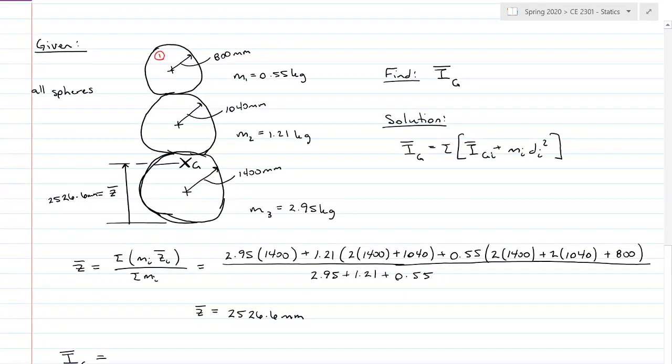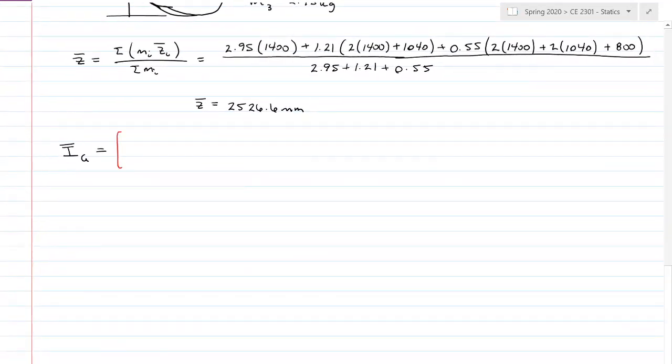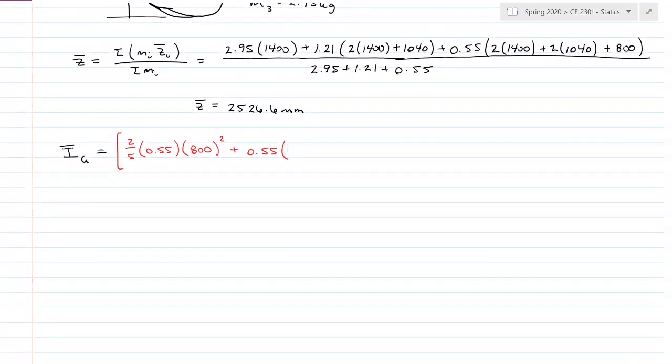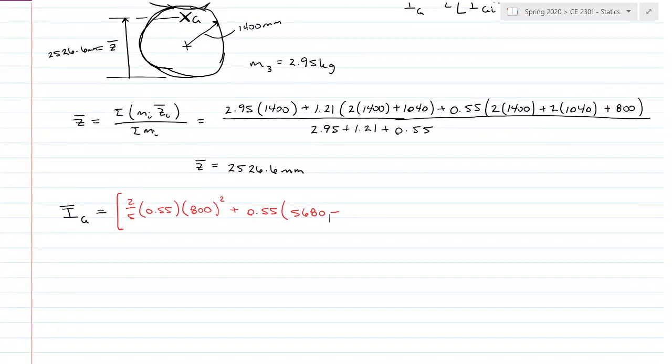So my top sphere here is one. The mass moment of inertia for a sphere is 2/5 times the mass, 0.55 kilograms, times the radius, 800 millimeters, squared. Then I need to move it plus the mass times the distance I want to travel. And I find that from the bottom of my little snowman shape to the center of mass one is 5,680 millimeters minus from the bottom to the composite mass center, 2,526.6, squared. End bracket, so there is my first sphere.